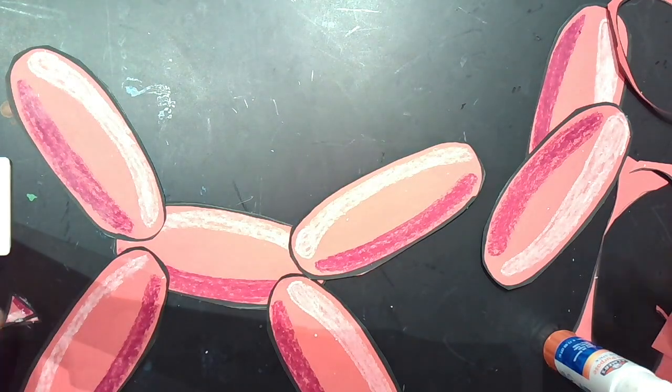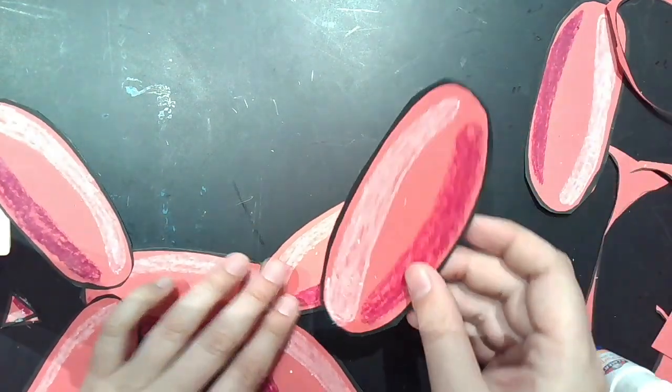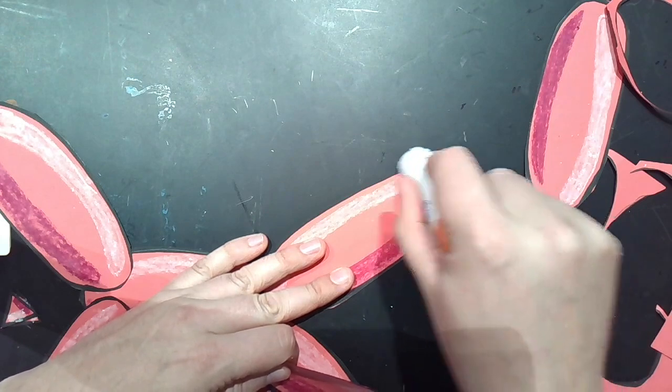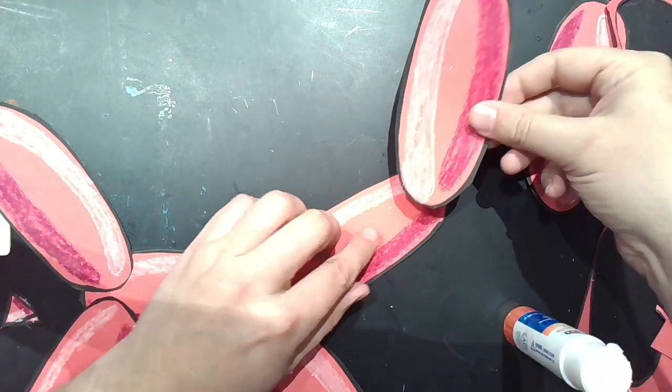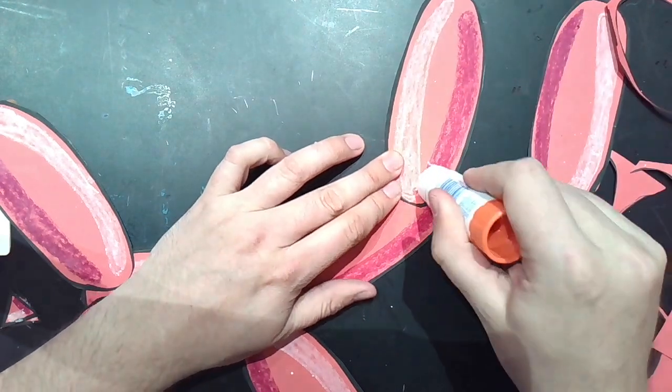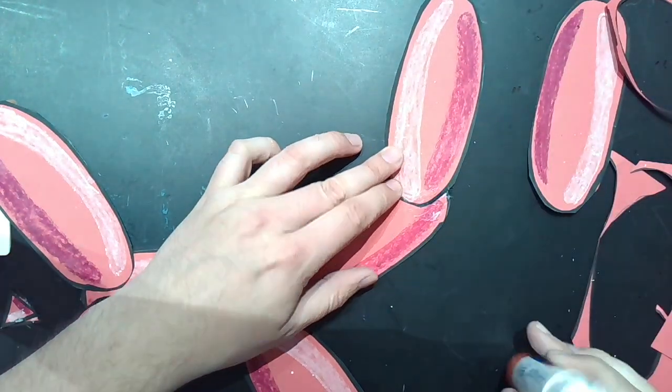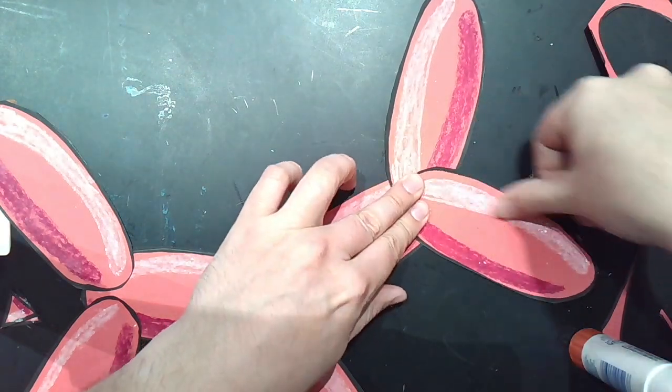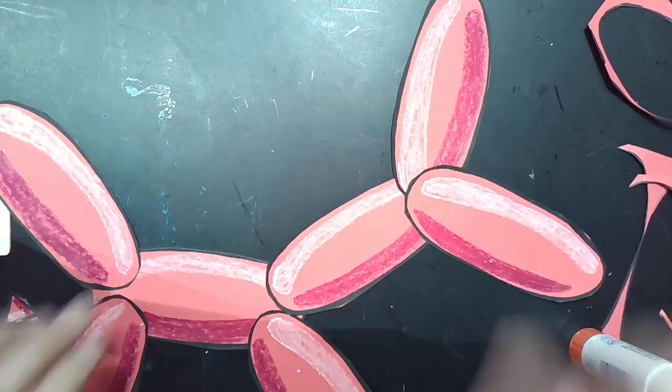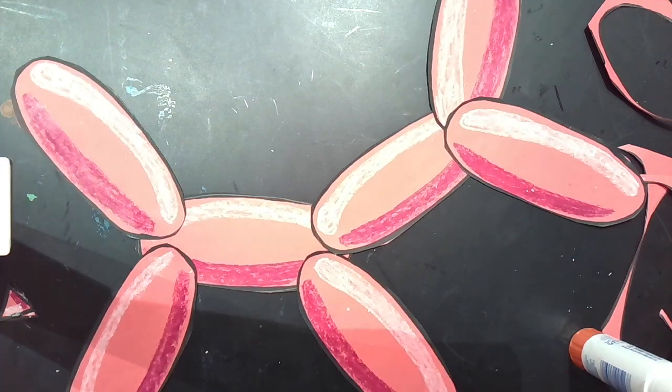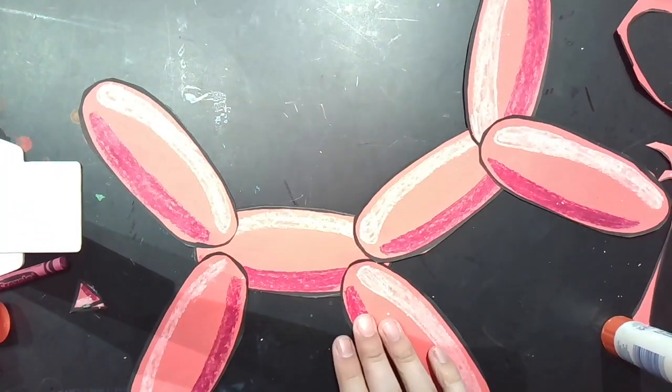So next, what I'm going to do is add the ear. So up here, add some glue. That's going to be our dog's ear. And then on top of these guys, a little more glue. And that's going to be my dog's face. Looking good so far. This is what his balloon animals really did look like.